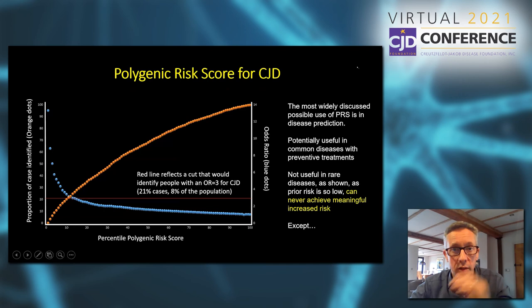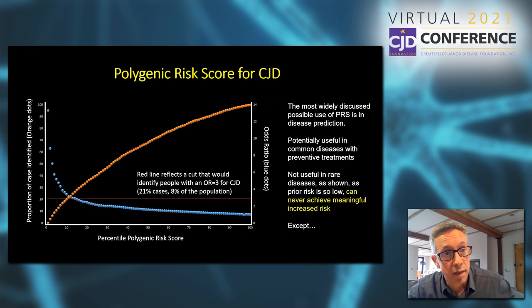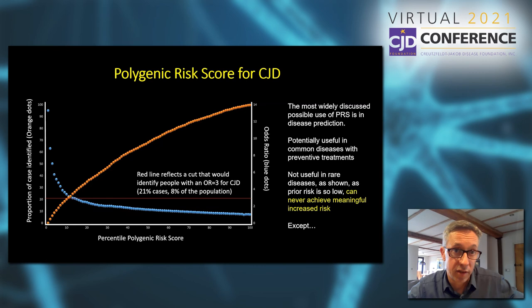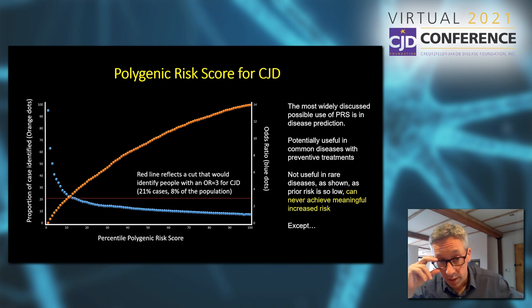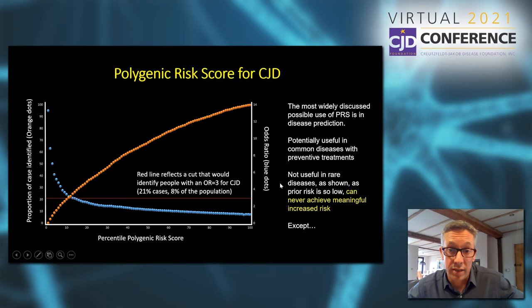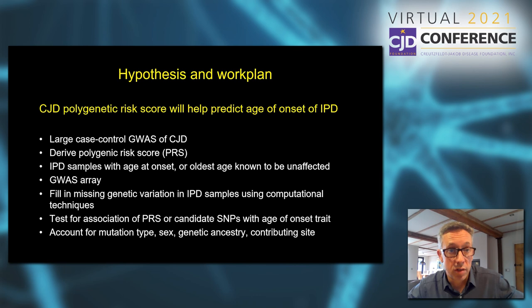Has a polygenic risk score been developed for CJD? Yes — in recent years, collaborators have joined together to make large collections of DNA from patients who died from sporadic CJD, and these have been analyzed with genetic techniques to derive a polygenic risk score for sporadic CJD. It's not useful in predicting your risk of sporadic CJD in the population because thankfully the condition is so rare. However, this polygenic risk score may be useful in modifying the risk of inherited prion disease, or the age at which the disease starts — and that's where the concept for this project came from.